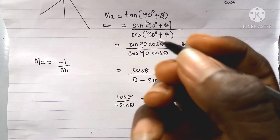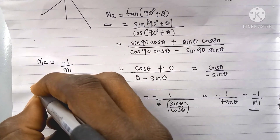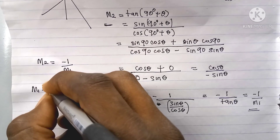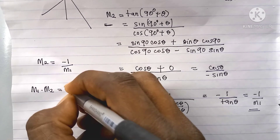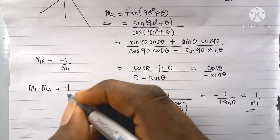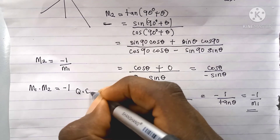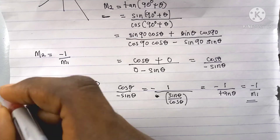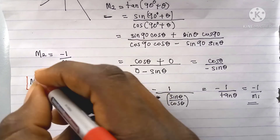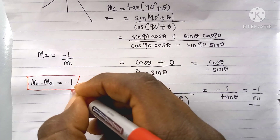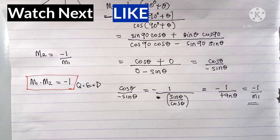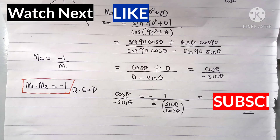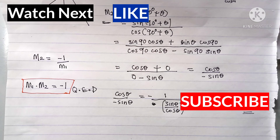Multiplying both sides by m1, we now have that m1 times m2 is equal to minus one. So we can see that the product of the gradients of two perpendicular lines is equal to minus one, successfully proving this property. Thank you for watching — leave a like if you understood this video and subscribe for more math proofs. Thanks and have a nice day!